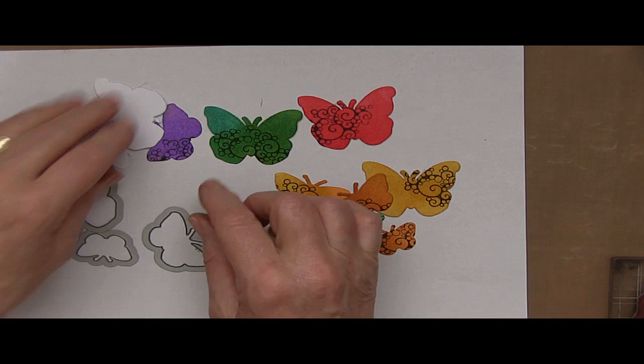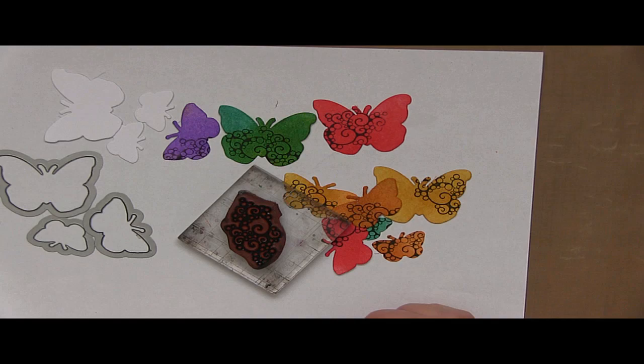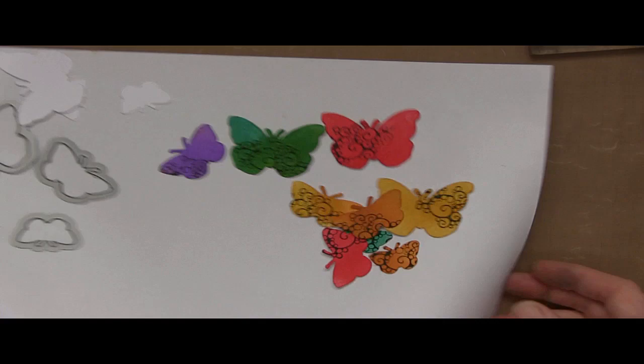Colored them with distress inks. The same distress ink colors that I use for the top of the card. And I've stamped them. But I've stamped them with another Designs by Ryn stamp. But this one's called Sea Bubbles. And you get two stamps in this set. You get a large one. And then you get this smaller one. And the smaller one is ideal for the butterflies.